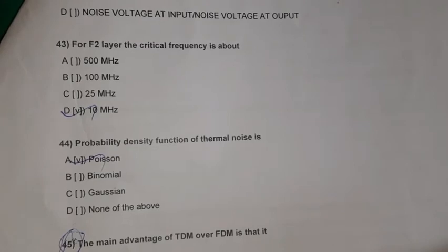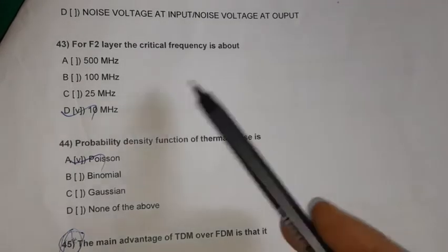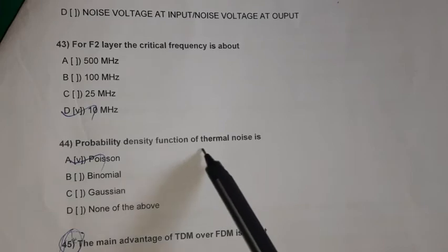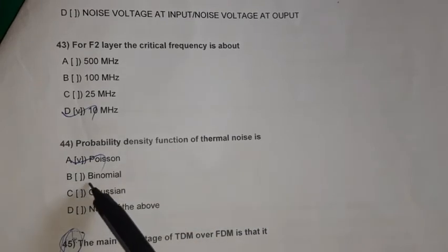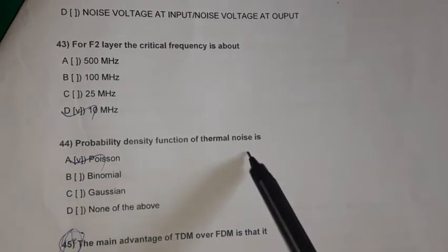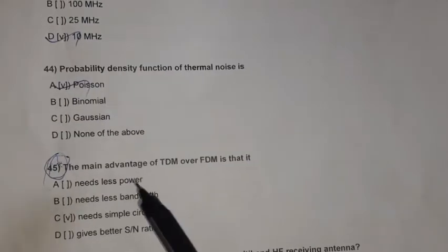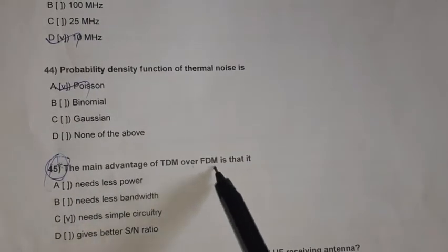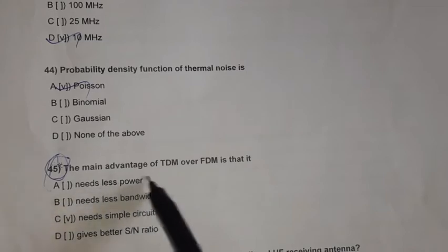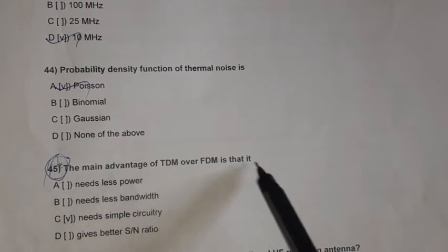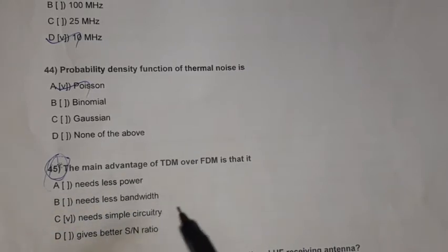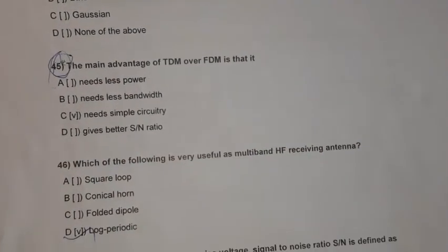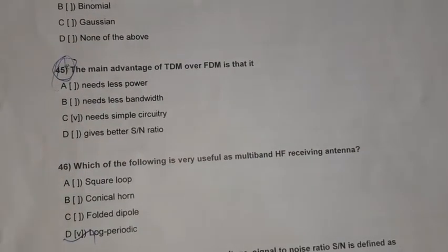Question 42: Noise figure is defined as the signal-to-noise ratio at the input divided by the signal-to-noise ratio at the output. Question 43: For the F2 layer, the critical frequency is above 10 megahertz.